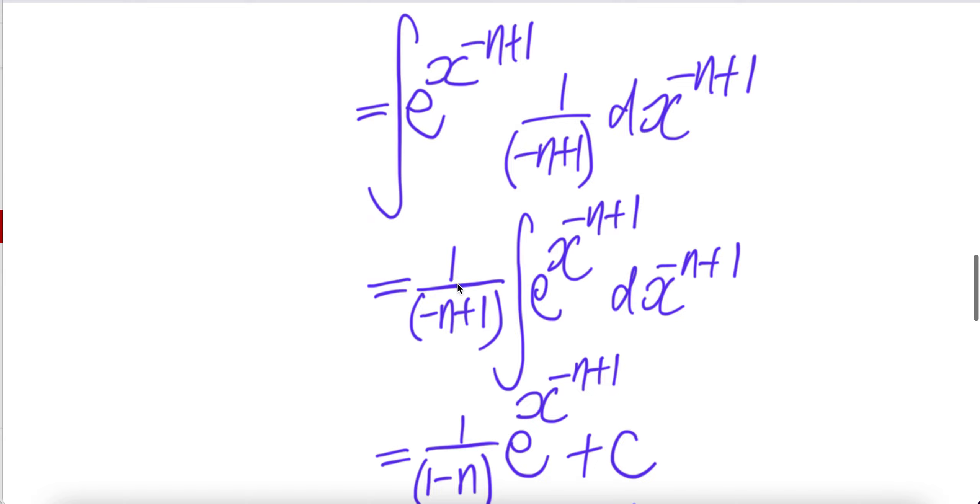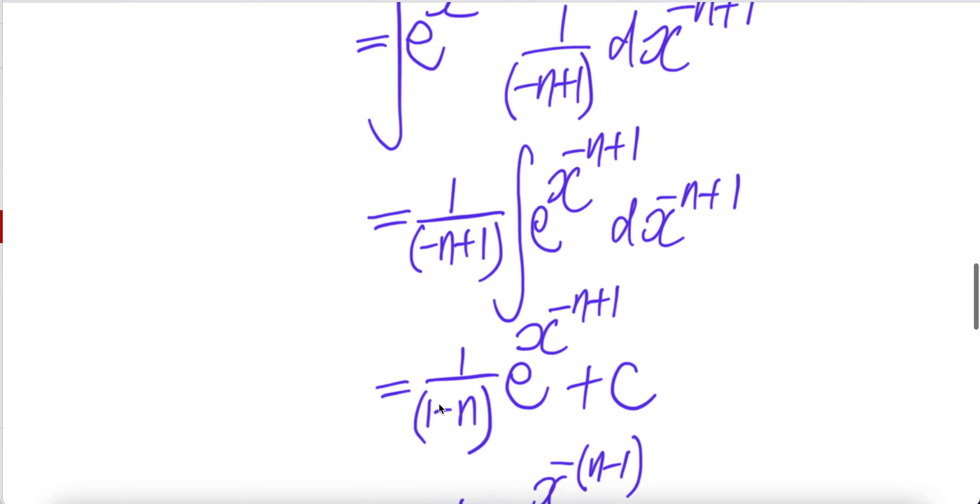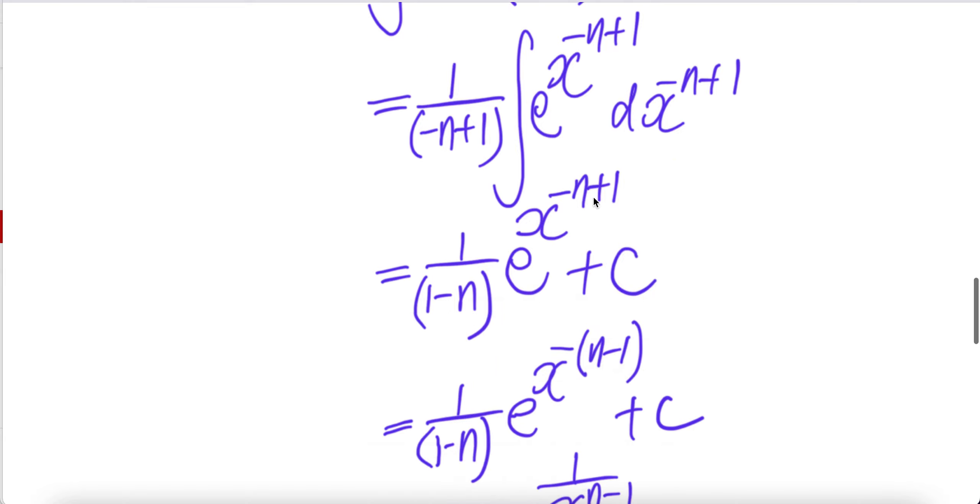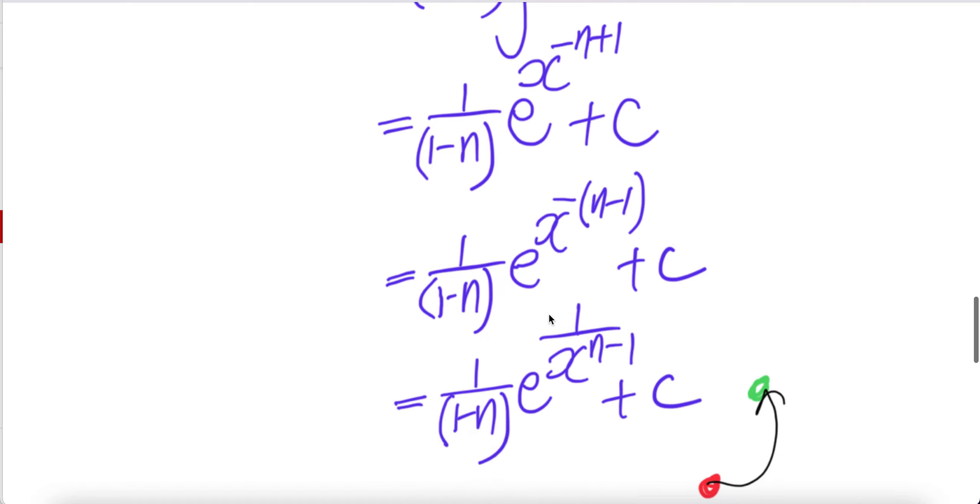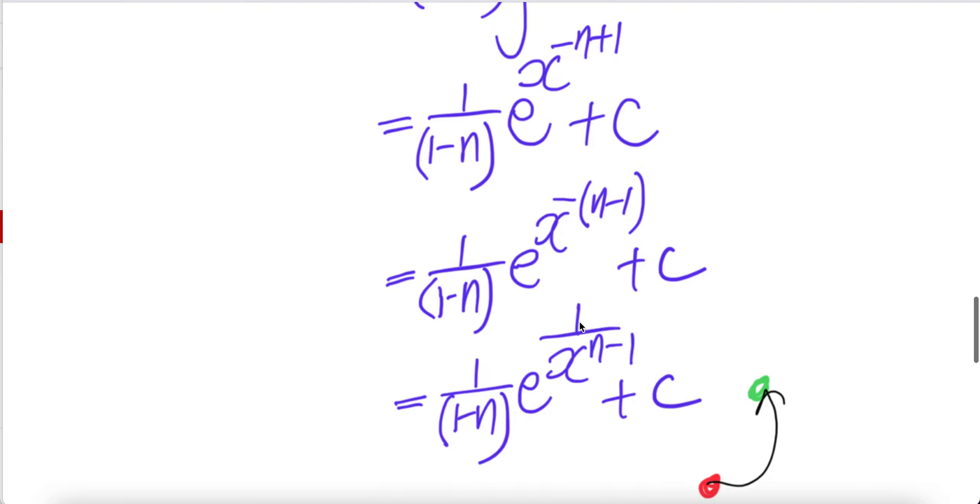This out of the integral, write it as 1 minus n. Now factor out the minus 1, you get n minus 1 for this guy. And then write this as e to the power 1 over x to the power n minus 1 plus c.